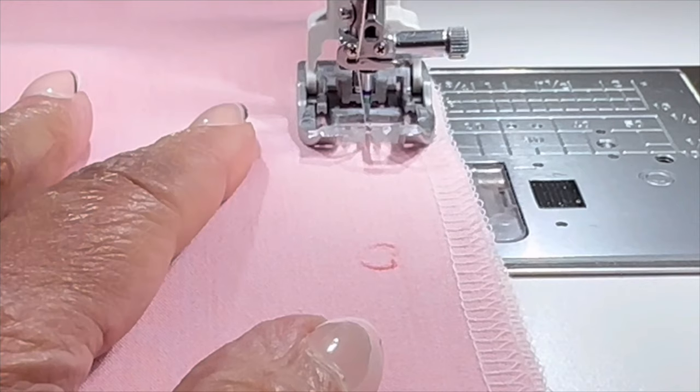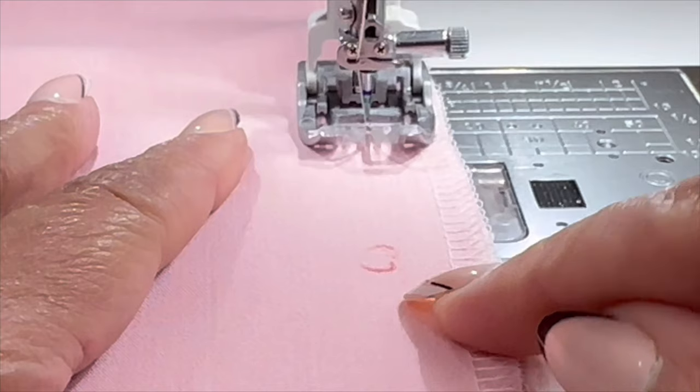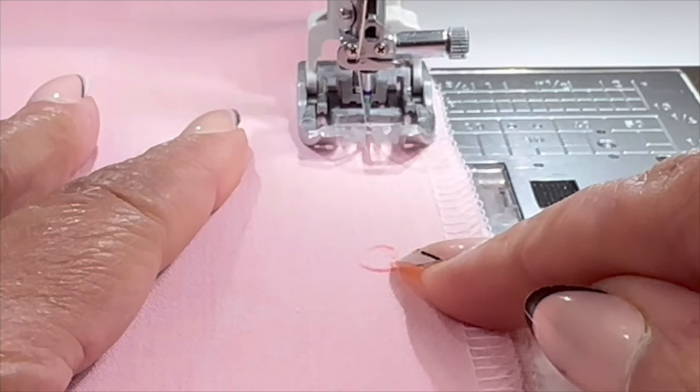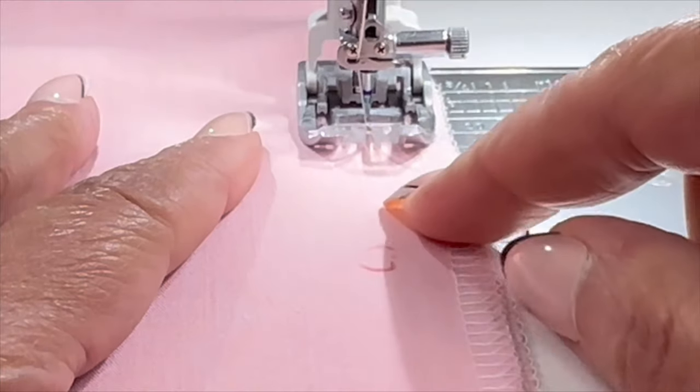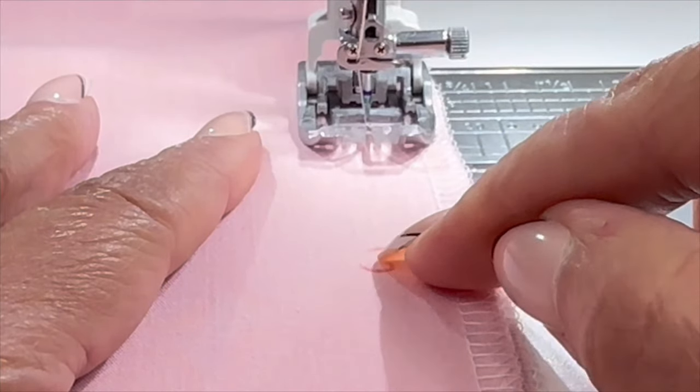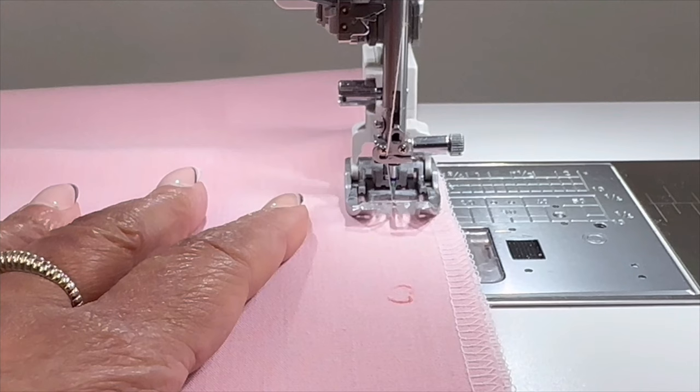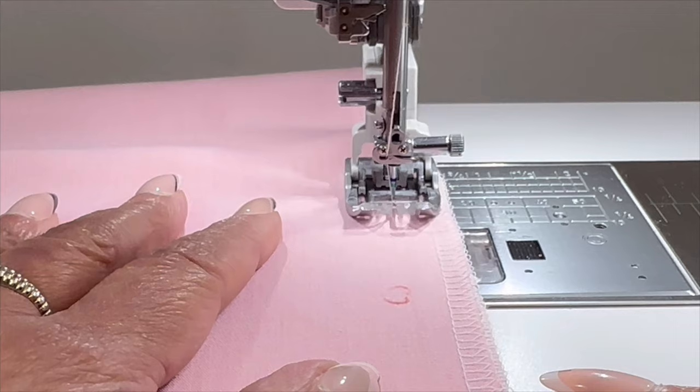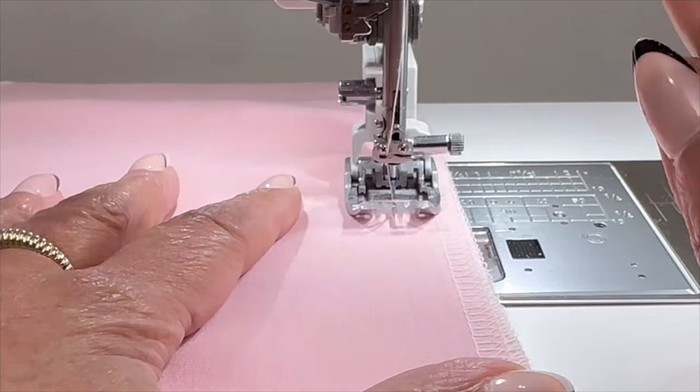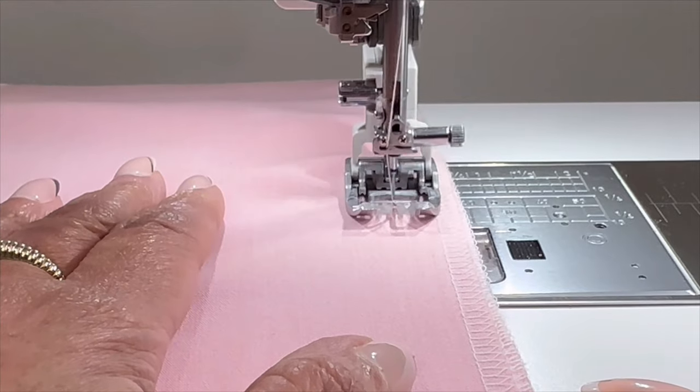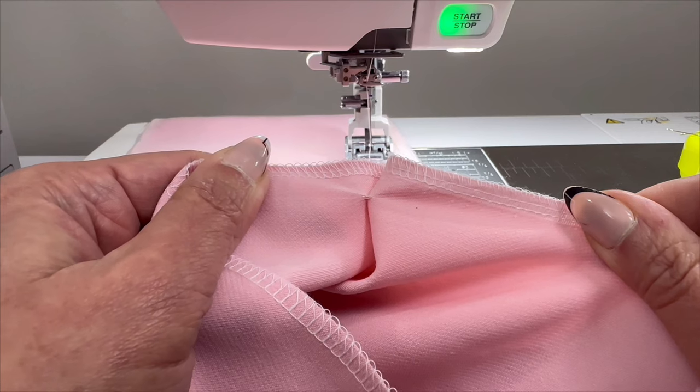When you get to right about an inch above the dot go ahead and reduce your stitch length to about 1.5 millimeters so that you can secure this stitch really good and you're going to reinforce at the dot. You want to make sure that it's not going to pull apart.